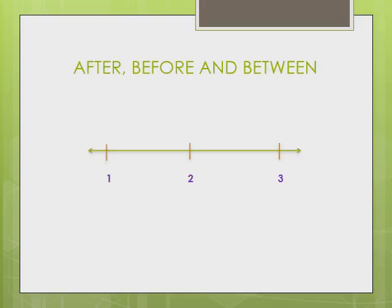Using number line, it is very easy to understand after, before, and between. As we know, after number 1, number 2 comes. What comes next? Number 3. Something comes next or behind us after number.